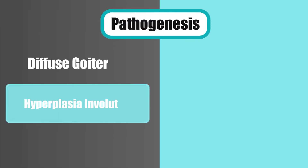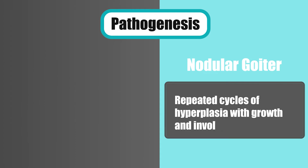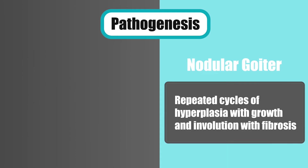Feature number three is pathogenesis. The pathogenesis of diffuse goiter is hyperplasia and involution. But the pathogenesis of nodular goiter is repeated cycles of hyperplasia with growth, and involution with fibrosis.